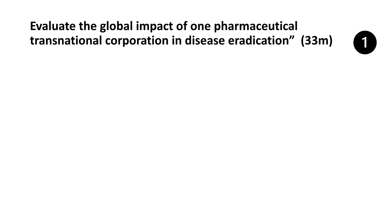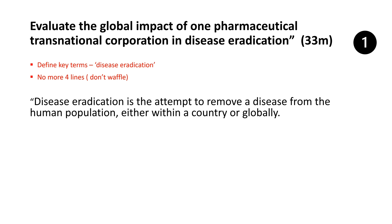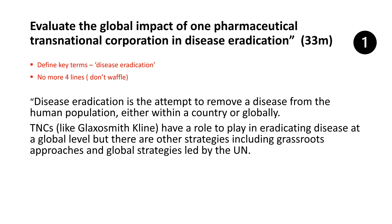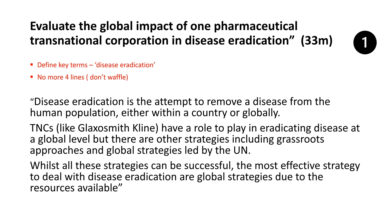When evaluating anything, I'm looking at strengths and weaknesses, but before I even go into looking at pharmaceutical companies I need a clear definition of the key term in my intro — no more than four lines. Here I've given my definition of disease eradication: how it's the attempt to remove disease completely from a human population. Then I have a brief line or two saying that TNCs do have a role to play but they're not the only strategy — grassroots and global strategies are two others — and then I put my thesis: the most effective strategy for disease eradication is global strategies.